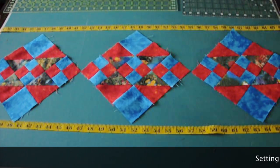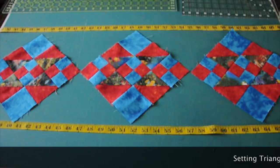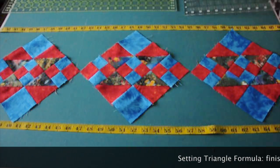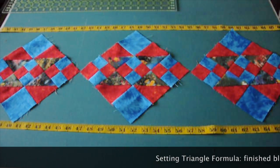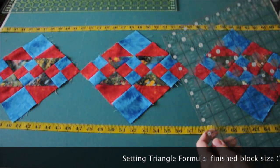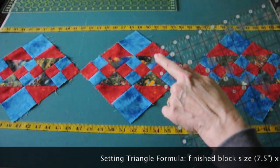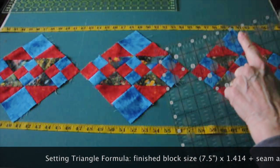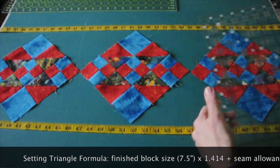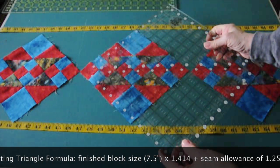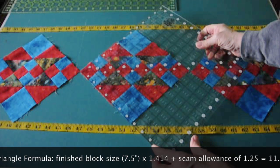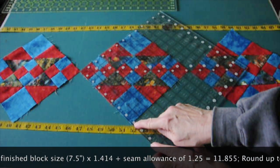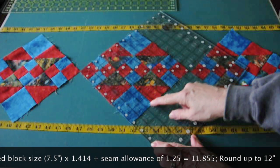There is a formula to figure that out. You start by knowing what the finished size of your block is. In this case, these blocks measure eight inches unfinished, so the finished size is seven and a half. The formula is the finished size, in this case 7.5, times 1.414 plus 1.25, that's your seam allowance. You add all those up and it equals 11.855. You want to round that up to the next whole number, which is twelve.